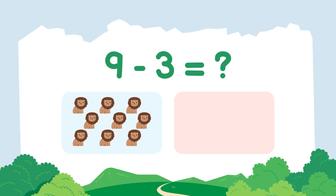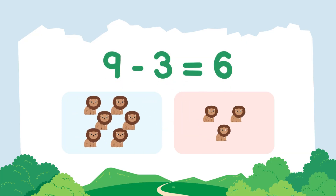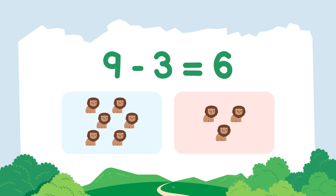Nine lions minus three lions equals — Shash Sheer — six lions. Good job!